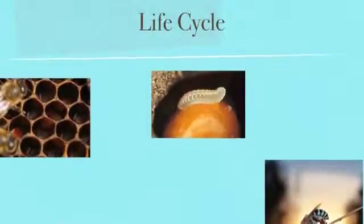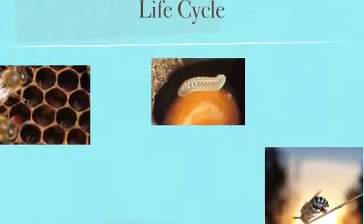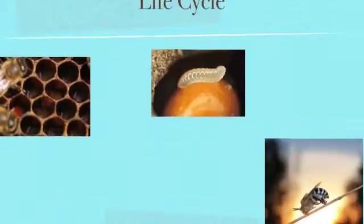The bee starts from an egg, then a larva, and then a pupa, and then an adult. The adult has some eggs and then it starts all over again.